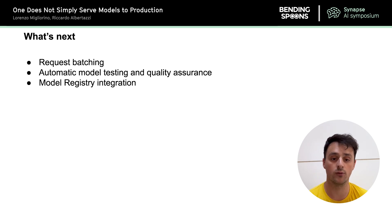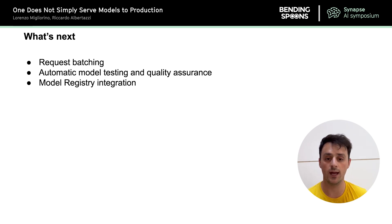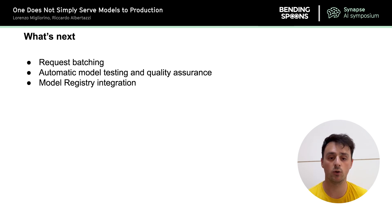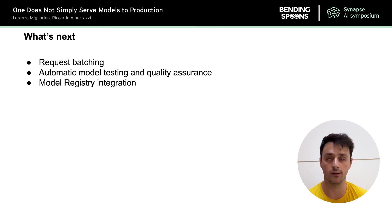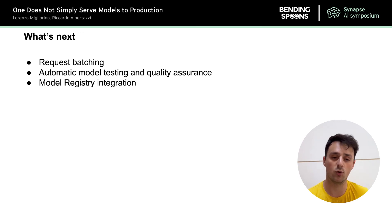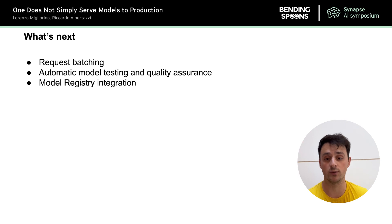What's next for Orion Serving? In terms of improving VM utilization, we want to implement request batching, which would allow us to exploit GPU parallelization even more. Request batching waits a short time to batch multiple requests together into one on the GPU, exploiting its parallelization capabilities. This may come at a small latency increase, but it would definitely increase the general throughput of our machines, reducing our costs even more.